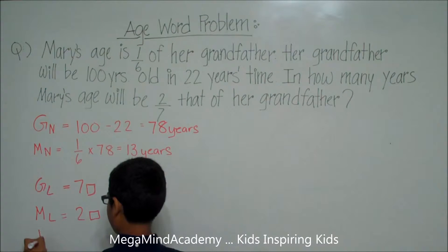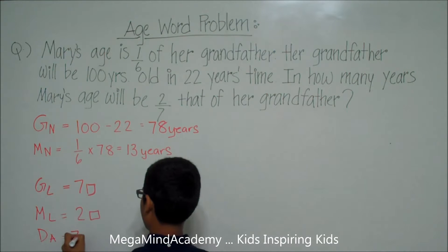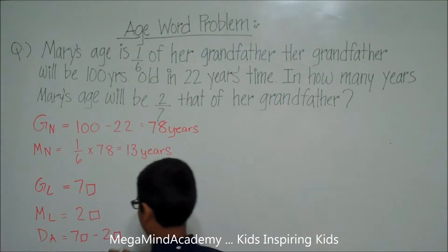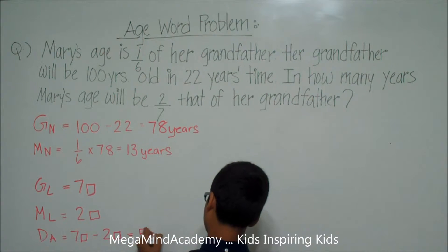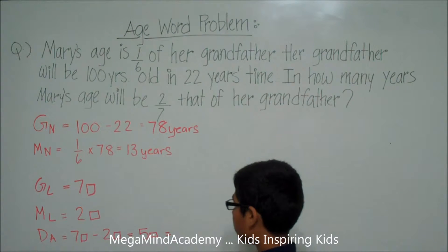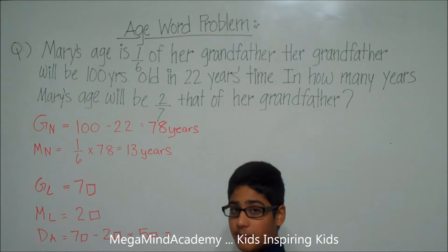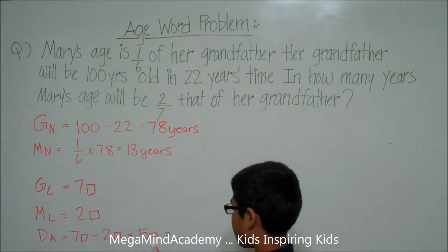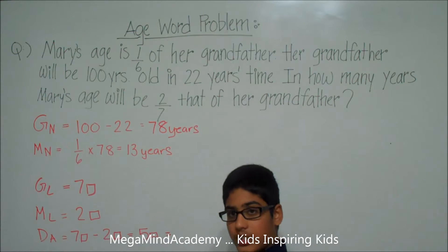This means that the difference in age, D for difference, A for age, is equal to seven units minus two units, which is equal to five units. The difference in age remains the same even as you get older. So this means that those five units is also equal to the difference between 78 and 13.